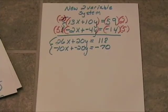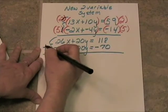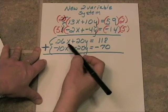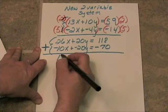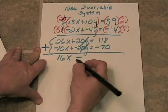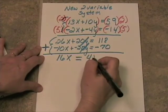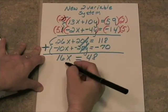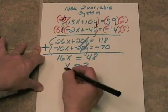Let's go ahead and add. We'll put our line across and put a great big plus sign here. 26x plus a negative 10x is 16x. These guys will add to 0. And over here we're going to get 48. We'll divide through by 16 and we'll get x equals 3.